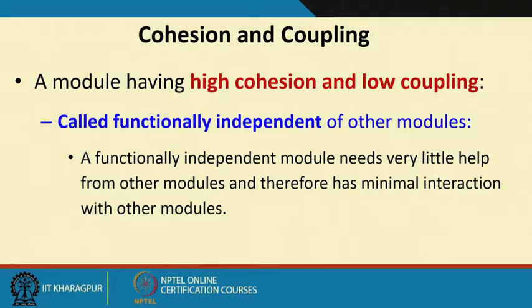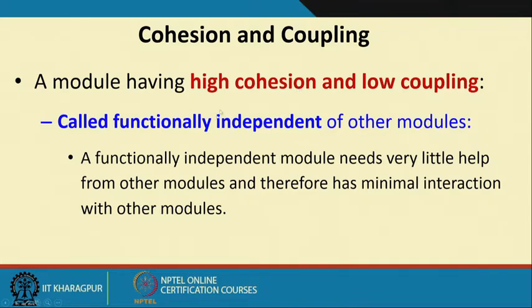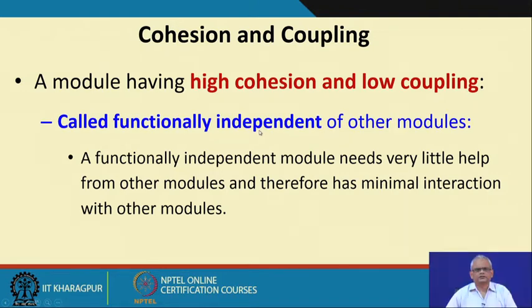To identify functional independence, we need to look at the cohesion and coupling among the modules. A good design where the modules are functionally independent has high cohesion and low coupling. If they have high cohesion and low coupling, we say that the modules are functionally independent. We must now define the terms cohesion and coupling.